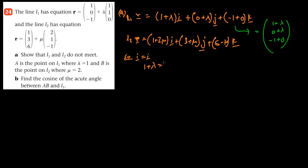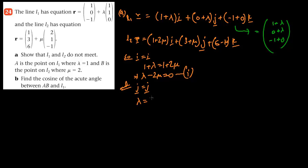Setting i components equal: 1 + λ = 1 + 2μ, giving equation 1: λ − 2μ = 0. Setting j components equal: 0 + λ = 3 + μ, giving equation 2: λ − μ = 3.